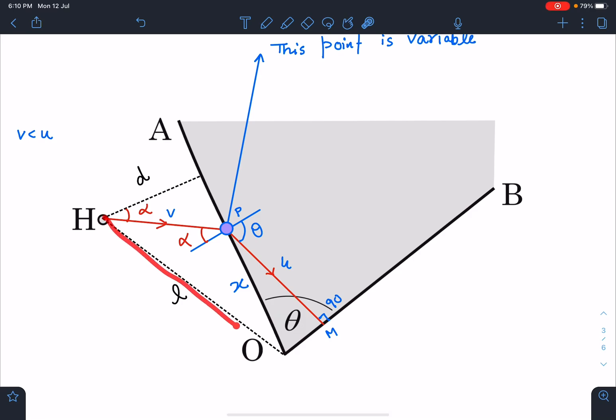If you see, this length is l, this length is d, so this entire distance is known to us: √(l² - d²). And this distance is d tan α in this right angle triangle. So x, the remaining distance, is going to be √(l² - d²) - d tan α. This is the value of x.